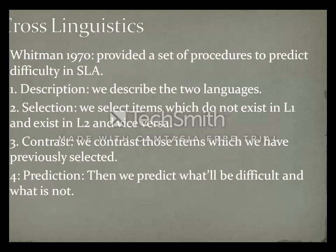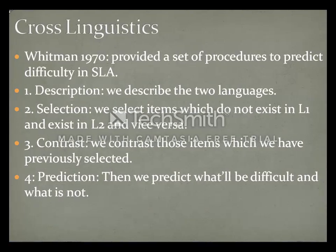Now we move to procedure. Whitman (1970) provided a set of procedures to predict difficulty in second language acquisition — basically four procedures. The first is description: we describe the two language systems. The second is selection: we select items which do not exist in L1 but exist in L2, and vice versa.